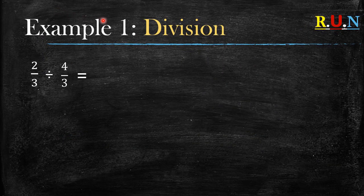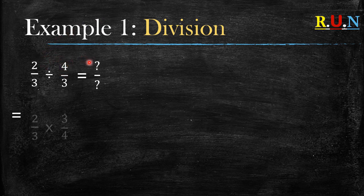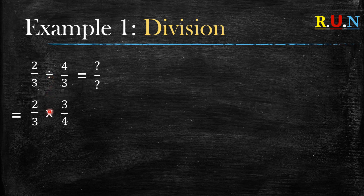Example number one: division. What do we do when it's 2 over 3 divided by 4 over 3? The first thing we do is we change the division sign to multiplication. But when you change the division sign to multiplication, something has to happen to the second part of the sum.